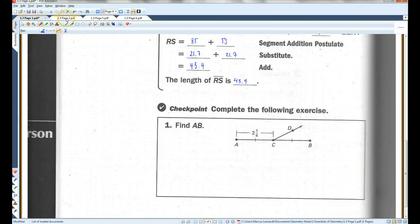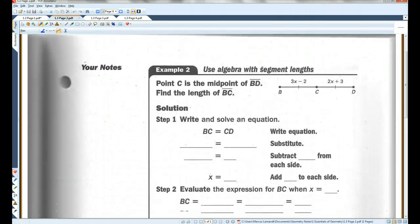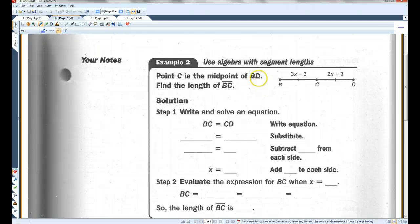Let's go on to page two. Point C is the midpoint of BD. Find the length of BC. Now we know that BC equals CD. So we have this equation. BC is 3X minus 2, and CD is 2X plus 3.